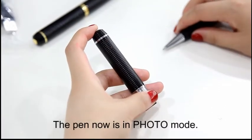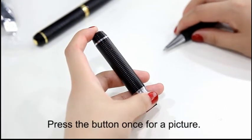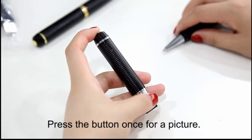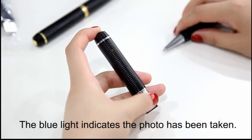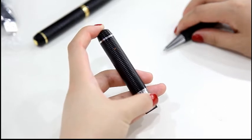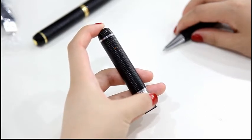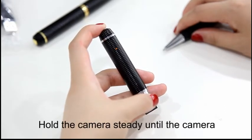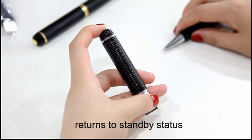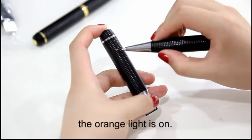The pen now is in photo mode, press the button once for a picture. The blue light indicates the photo has been taken. Hold the camera steady until the camera returns to standby status. The orange light is on.